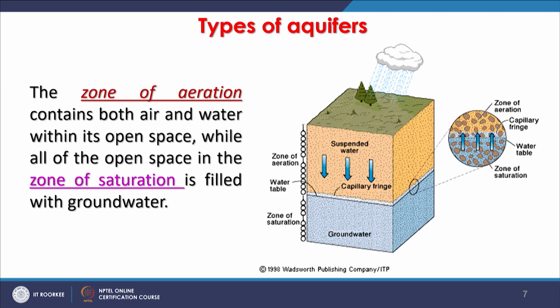The top part — the zone of aeration — extends from the surface through soil and some rock that is not fully saturated with water; pores may be filled with air, water, or a mix. All open space in the zone of saturation is filled with groundwater. A zoomed diagram shows the zone of aeration, then below that the water table, and below that the zone of saturation. Water rising by capillary fringe also moves upward in certain cases.